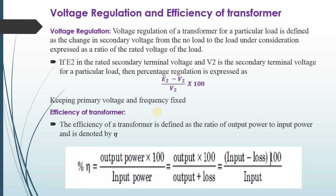Now, efficiency of a transformer. The efficiency of a transformer is defined as the ratio of output power to input power, and is denoted by eta (η). It is given by output power divided by input power. In this equation, we can write input power as output power plus losses. We can also write output power as input power minus losses. So we can write down this efficiency in different forms.